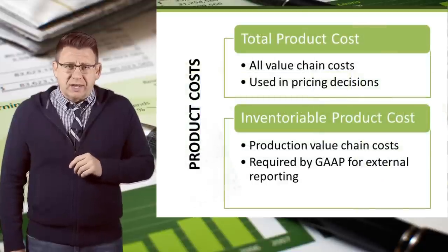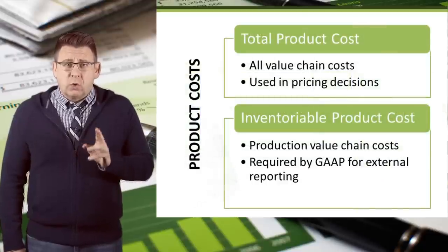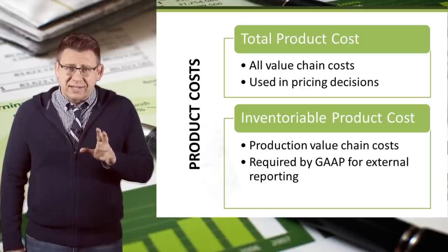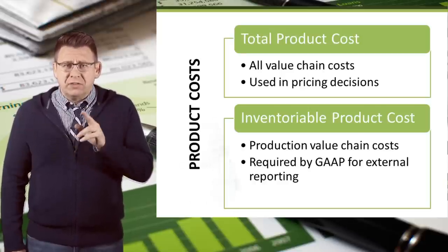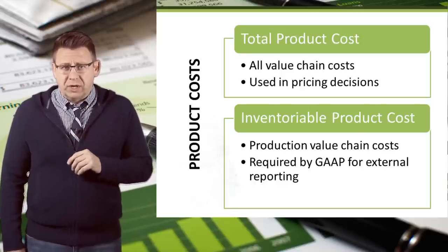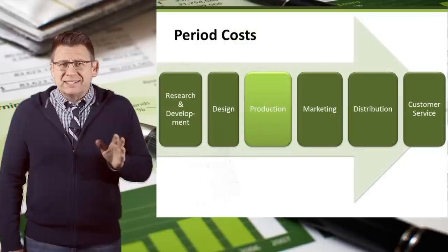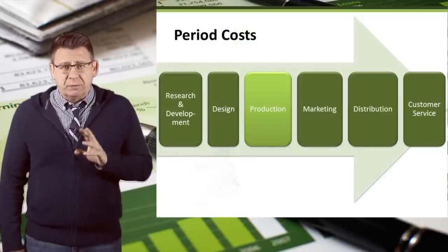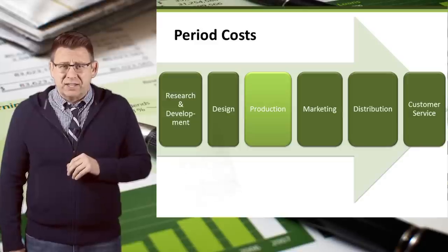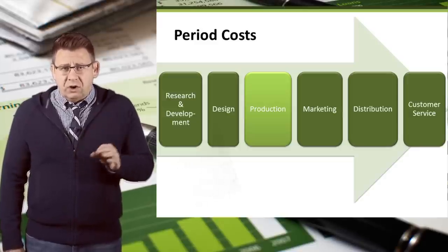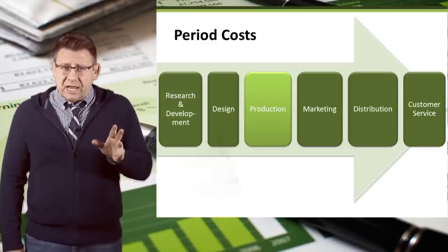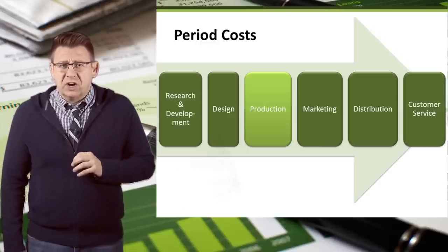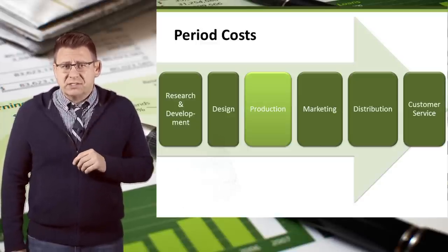Inventoryable product costs are required by GAAP to be used for the cost of the asset inventory, rather than total product costs. Because GAAP will not allow total product costs to be reported on the balance sheet as an asset, the costs incurred in R&D, design, marketing, distribution, and customer service are known as period costs.